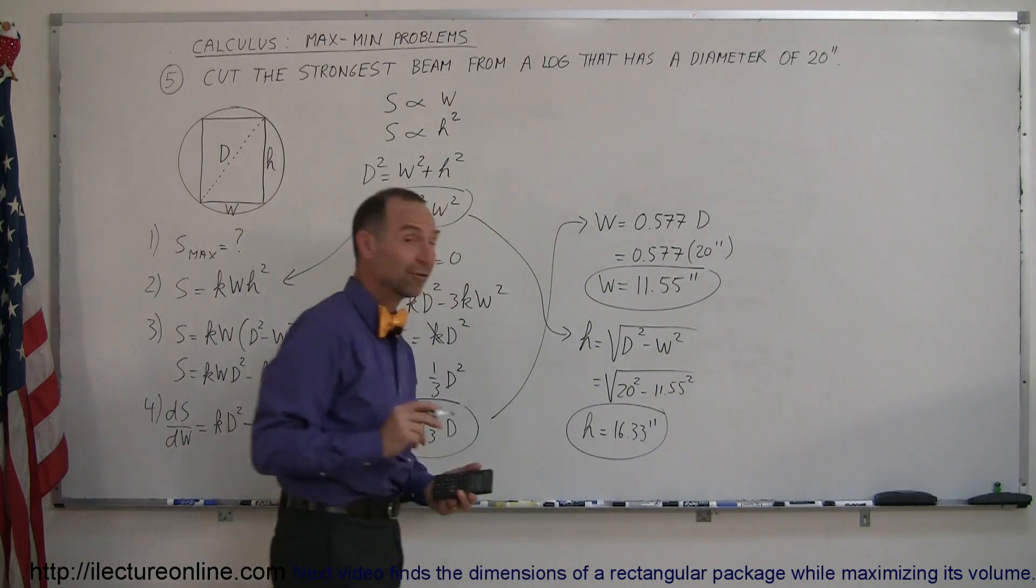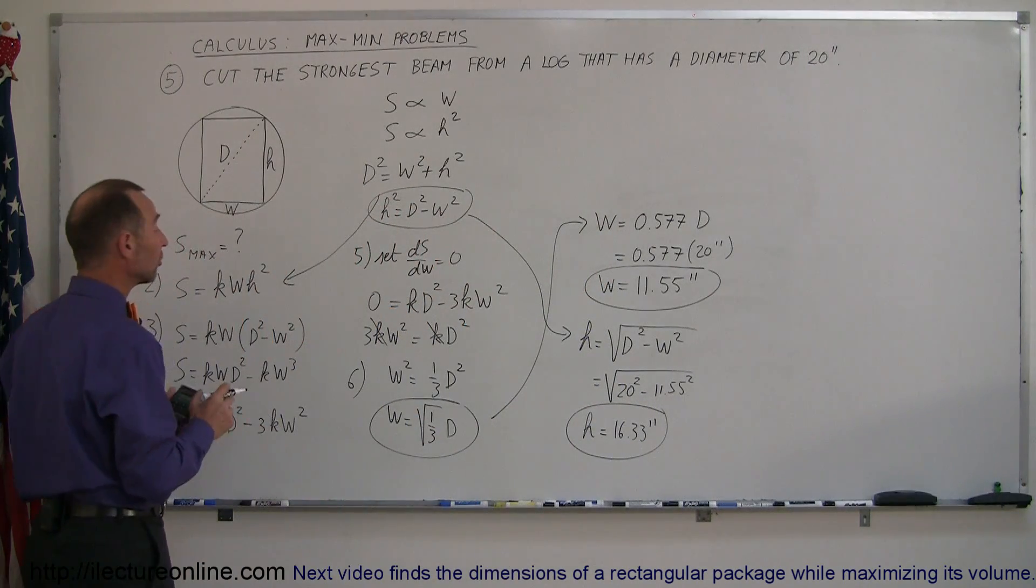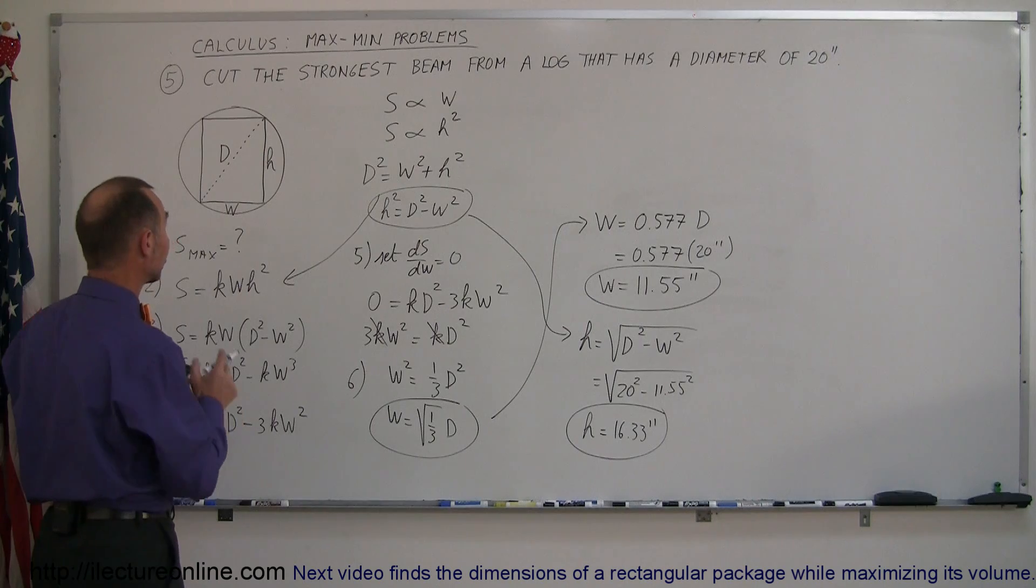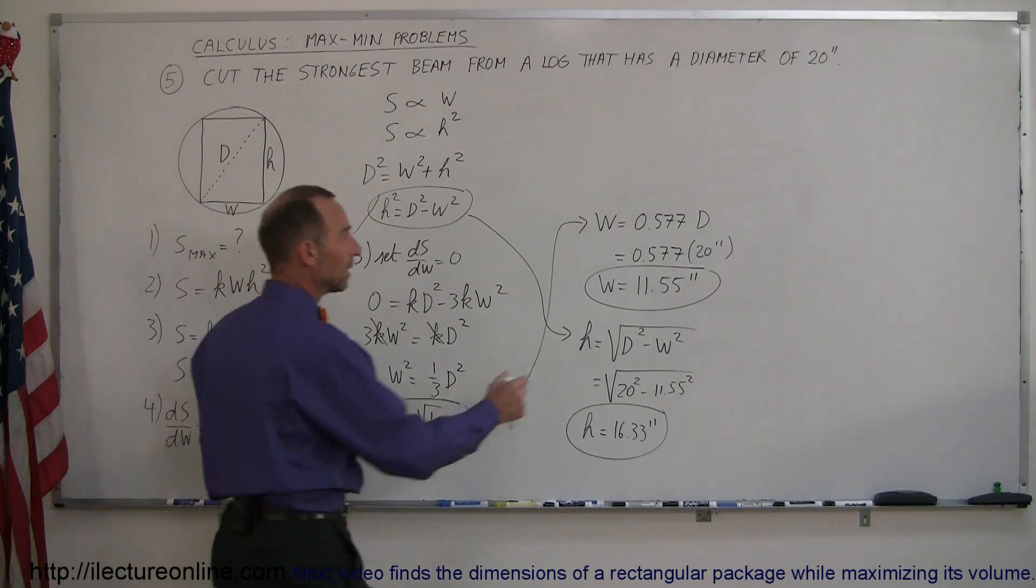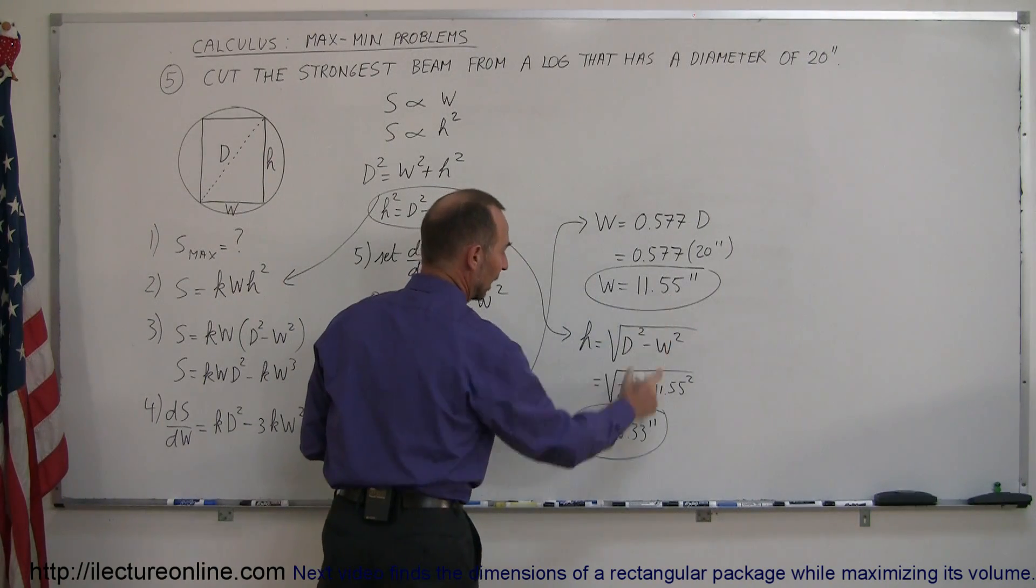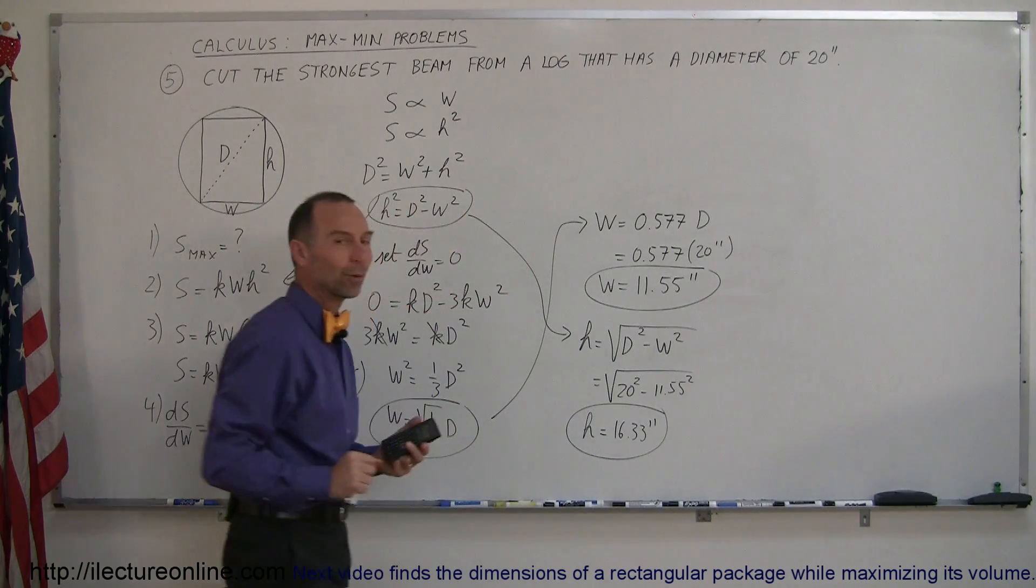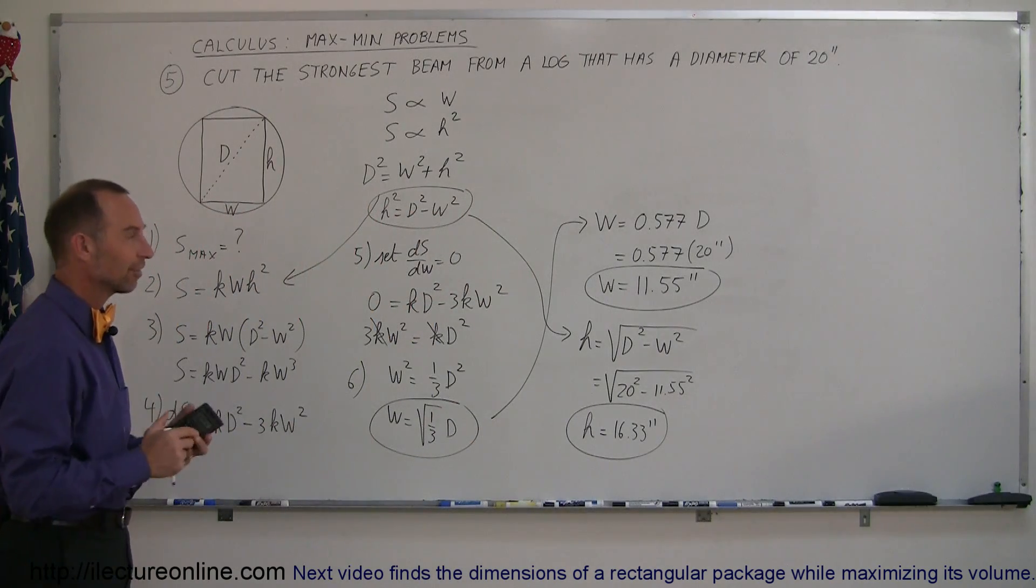All right. So if you have a log with a diameter of 20 inches and you want to cut it so that the beam is as strong as it can be, you want the width to be 11.55 inches and the height to be 16.33 inches. And that's how you do the problem.